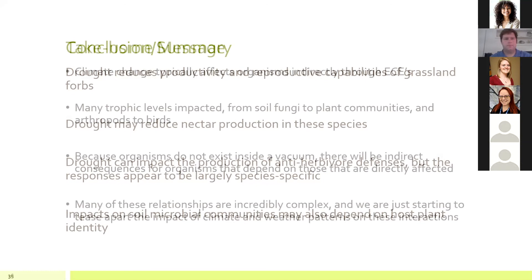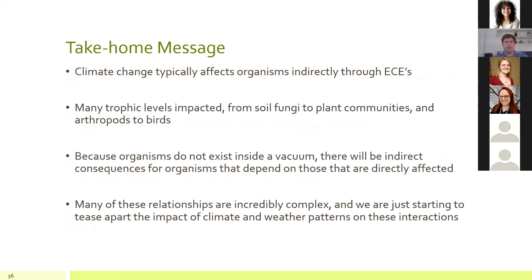The take-home message from this talk is that climate change affects organisms both directly and indirectly through extreme climatic events, and many trophic levels can be impacted. Because these organisms aren't operating within a vacuum, there will be indirect consequences for all organisms that depend on or interact with those affected. These relationships are incredibly complex — involving plant-soil feedbacks, plants, and fungi — and we're really just starting to understand the impacts of climate and weather patterns on these interactions.